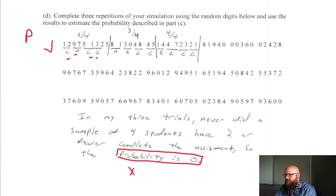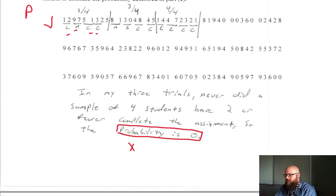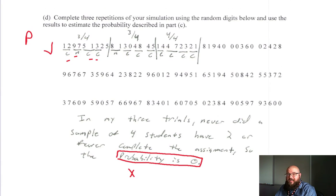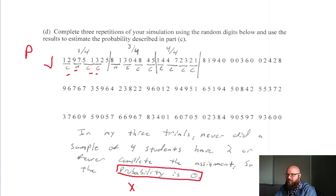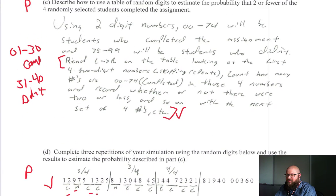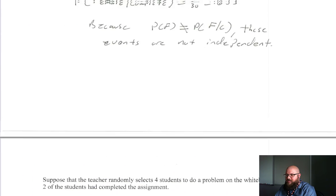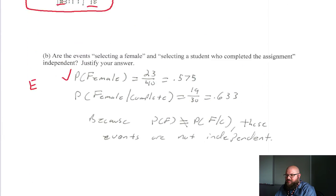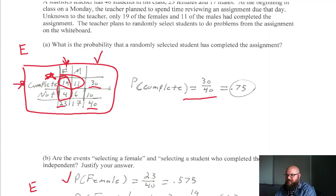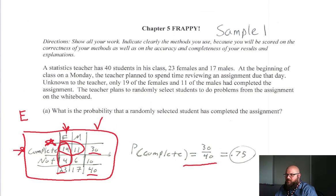Overall for Student 1: a P is worth 0.5 and an E is worth one point. They got two E's and two P's, so Sample 1 overall gets a 3 for their free response on this one.